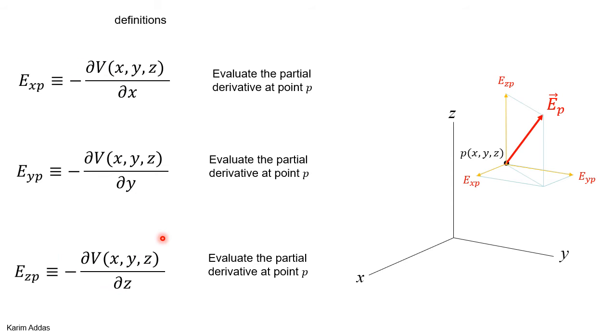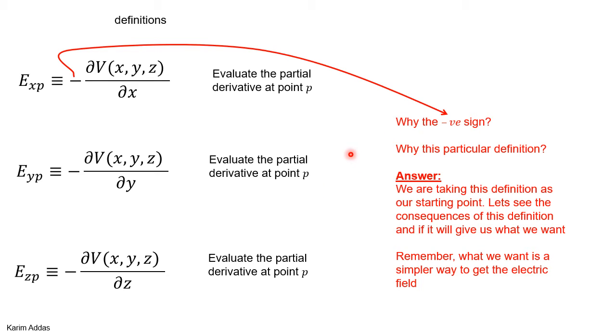This is a definition. And we're going to see in a while when you use this definition, when you start with this definition, what the consequences will be. So if you ask at this point, why the negative sign? And why this particular definition, partial V by partial x? These are good questions to ask. The answer is that we're taking this as our definition and as our starting point. And let's just see what the consequences are and if we'll be able to do what we want to do. Remember what we want to do. We want to be able to find an easier way to get the electric field rather than starting with Coulomb's law. So are we going to be able, based on this definition, relationship between electric field and potential to find a way to get the potential from the charge distribution or not? We will be able to. So this is going to be our starting definition and let's see how we can proceed.